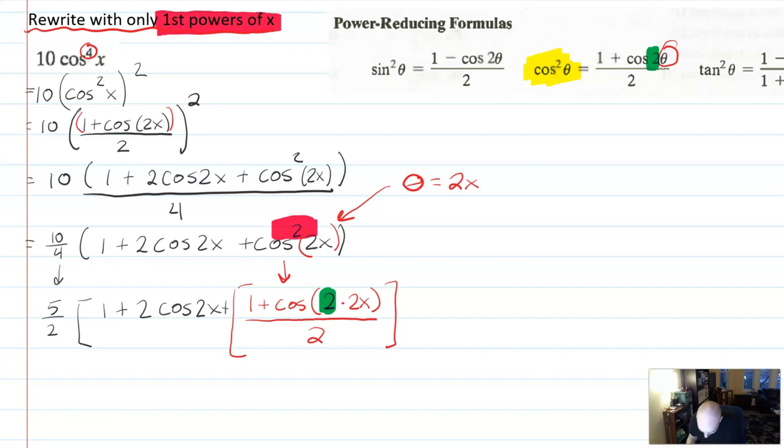Now you're actually done with the problem. I'm going to do one last step and simplify things down, but you can see why the power reducer identities are so gross now.